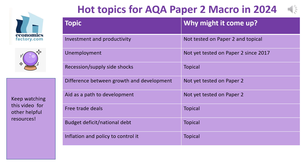Other topical areas include recession and supply-side shocks. The UK economy has suffered a number of shocks in recent years — most recently from Covid, food and energy shortages, and high prices partly associated with conflict in Ukraine. The UK economy was teetering on the brink of recession in 2023 and technically went into recession in the last half of that year, making it a topical area for examiners.